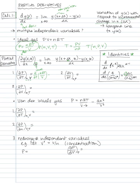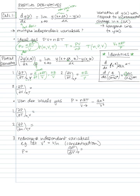When I take the partial derivative of P with respect to T, notice that I must hold the other two independent variables constant. Since we're differentiating with respect to T, we use P equals nRT over V. We take the partial derivative with respect to T of the argument nRT over V, and since T appears to the first power in the numerator, we simply get nR over V.